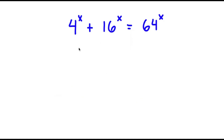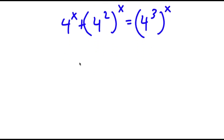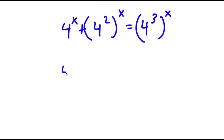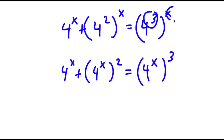In this problem, I have 4 to the power of x plus 16 to the power of x is equal to 64 to the power of x. Now, 16 can be rewritten as 4 squared, so I have 4 to the power of x plus 4 squared to the power of x. And 64 can be rewritten as 4 to the power of 3. Rewriting using exponent rules gives 4 to the power of x, plus 4 to the power of 2x, equals 4 to the power of 3x.